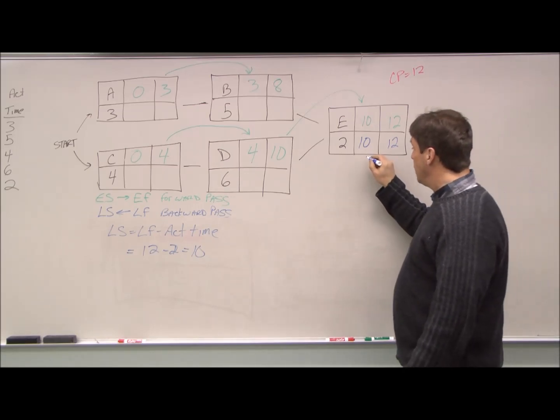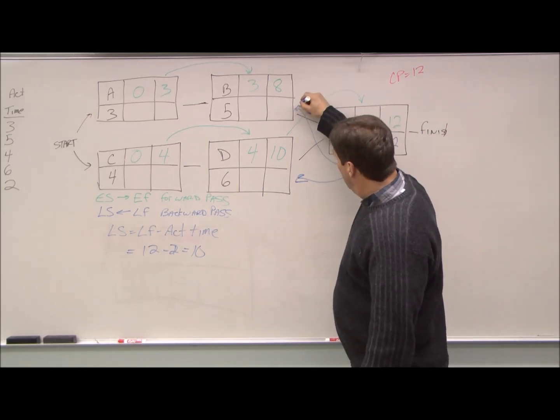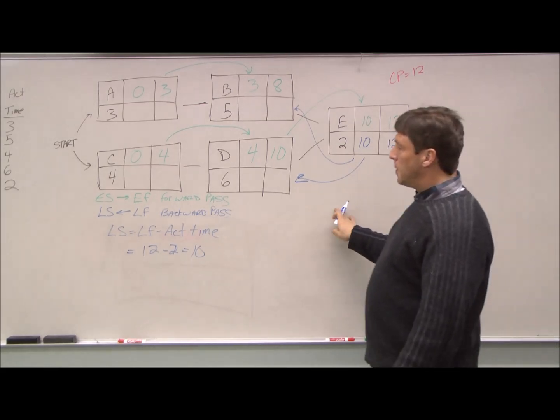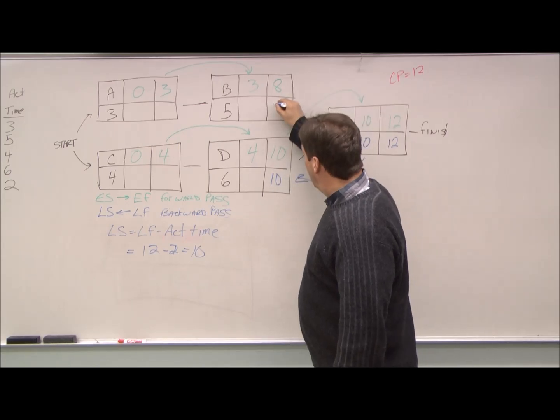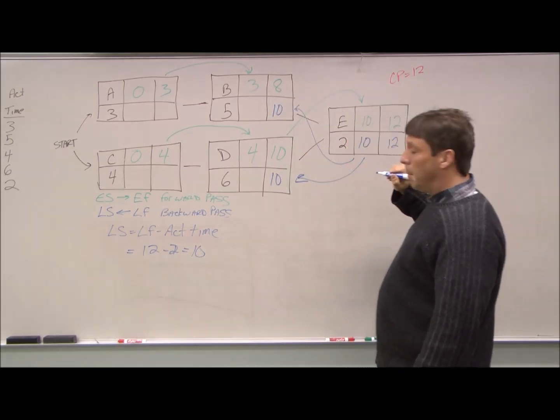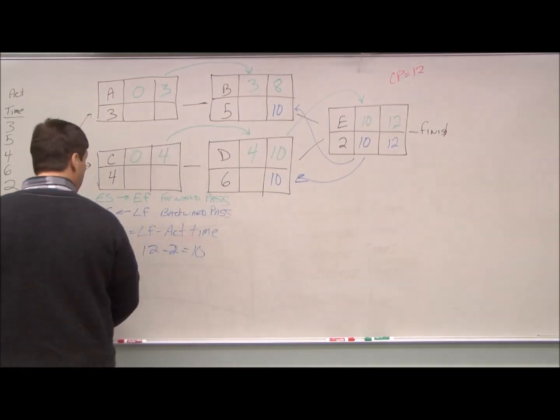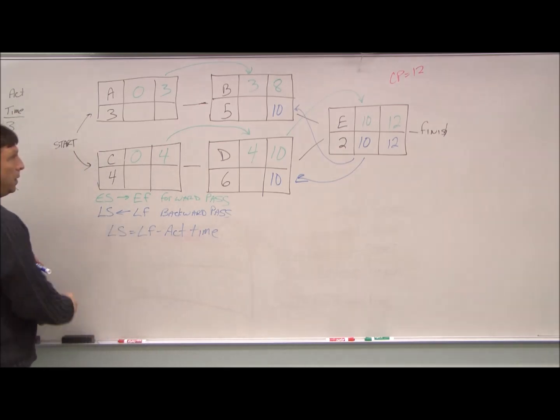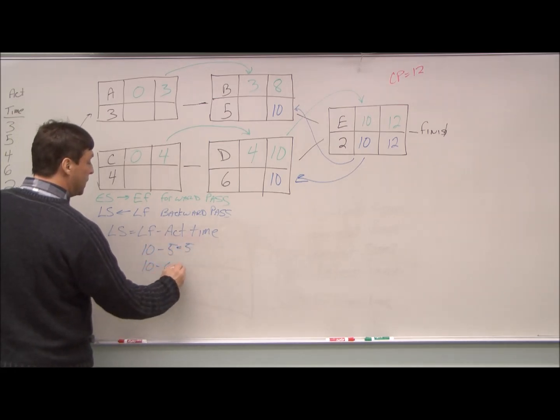Now this goes two places. This goes to our latest finish of our two immediate predecessors here, the operations that come before us. So that's pretty straightforward. We just bring it straight back. We do the same thing. We calculate the latest start. So we have ten minus five equals five. Ten minus six equals four.